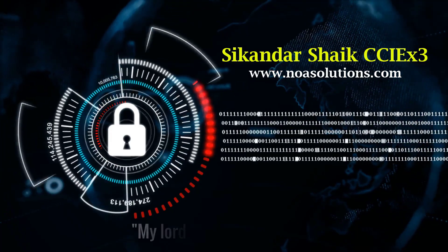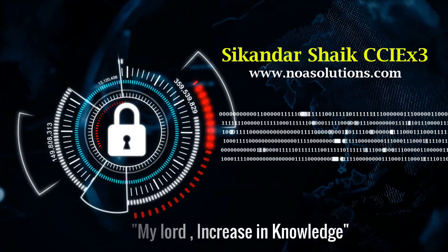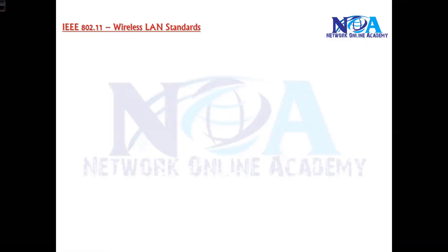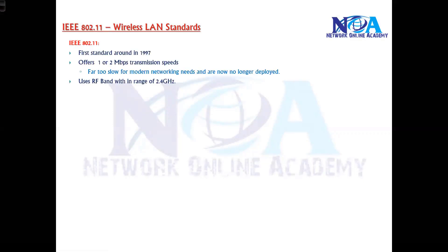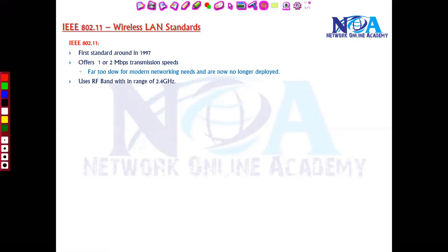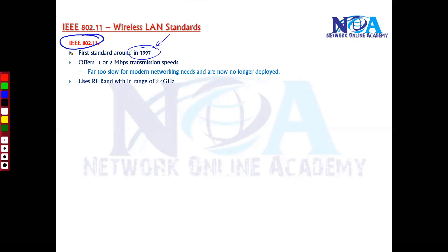Let's try to understand more about the standards and get into individual standards and their features. Starting with the first one, 802.11, which was the first standard introduced by IEEE, ratified in 1997 when the wireless IEEE standard was first established. Technically this was just named as 802.11 with no letter suffix like a, b, or c.